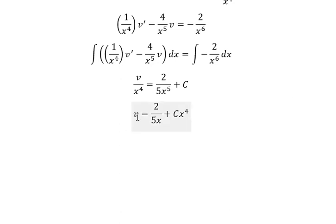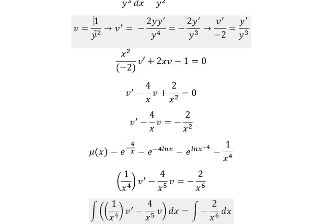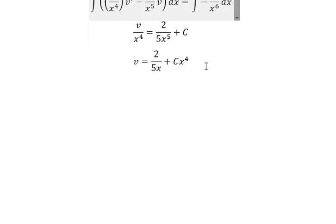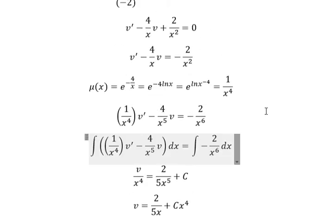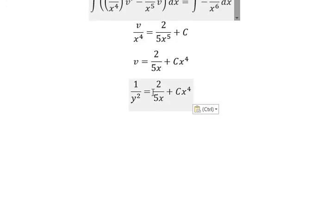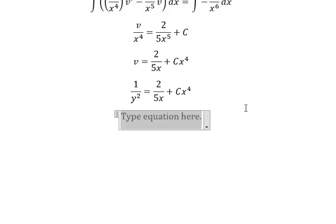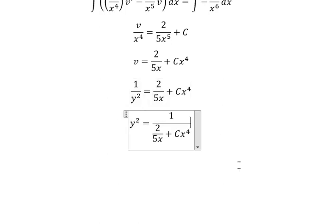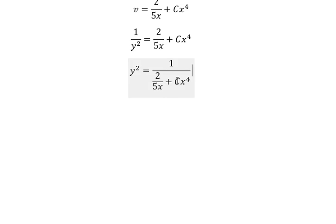For V, we have this one. So we put everything on the left and this one on the right. You will get Y square equal to 1 over, like this. Then we put the square root in both sides.